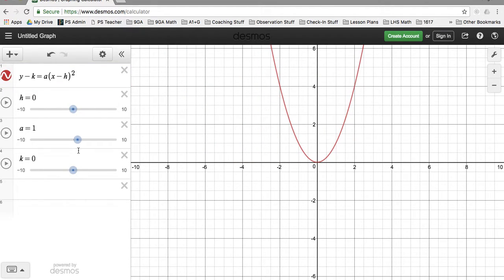And when it gets 0, it goes back to the origin. And when k is, which is right here, when k is getting bigger, it goes up. And if it goes to the negative and decreases, the parabola goes down as well.